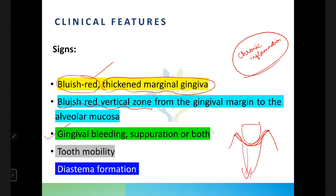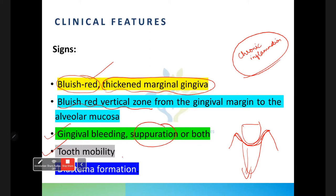There will be gingival bleeding, suppuration (pus formation), or both. There may be tooth mobility because the periodontal attachment is lost — bone loss and loss of the periodontal ligament cause the tooth to become mobile. There may also be diastema formation.